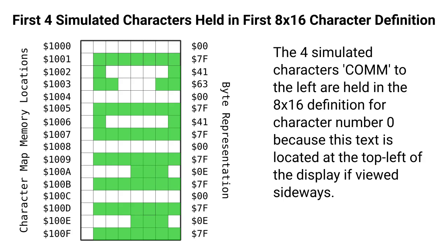On the VIC, each character can be defined using a series of 8 or 16 bytes, depending on whether we're using 8×8 or 8×16 characters. For this text mode we're going to use 8×16 characters, and we're going to use 4-bit wide simulated characters.